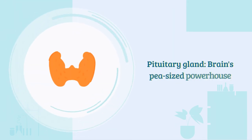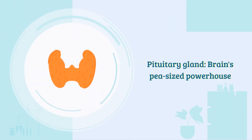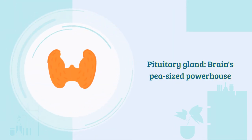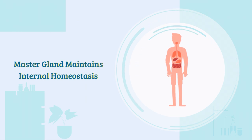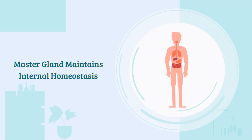The pituitary gland, also known as the hypophysis, is a small pea-sized gland located at the base of our brains. It is often referred to as the master gland of the human body because it plays a crucial role in maintaining internal homeostasis by releasing a variety of hormones that circulate throughout our system.